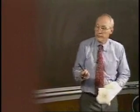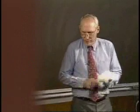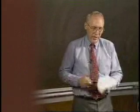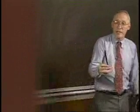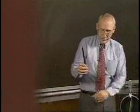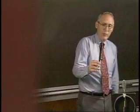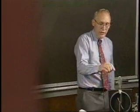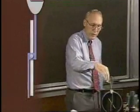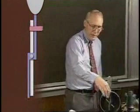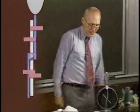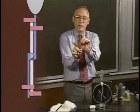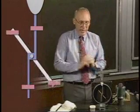If you rub this rubberized plastic rod with cat fur, it becomes charged — in this particular case it has extra electrons that it robbed away from the fur. We're going to put those extra electrons onto this device called an electroscope. Some electrons go down the piece of metal connecting it, and some get out on this little needle; they repel each other, so the needle swings out.